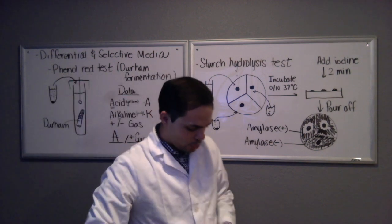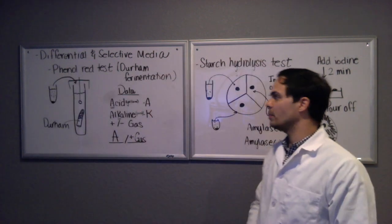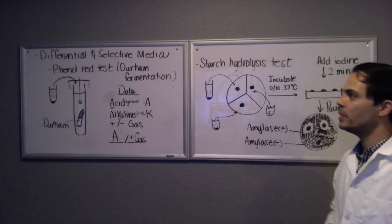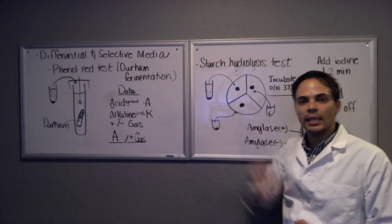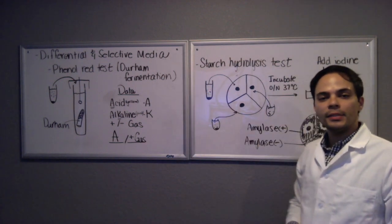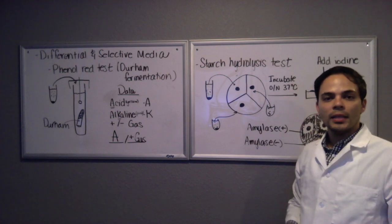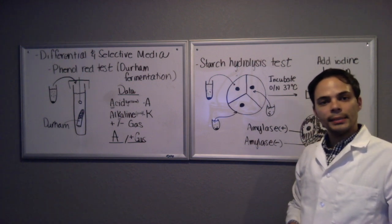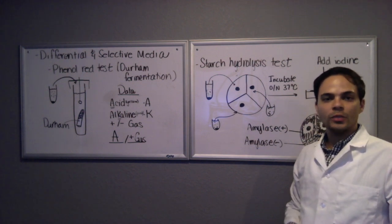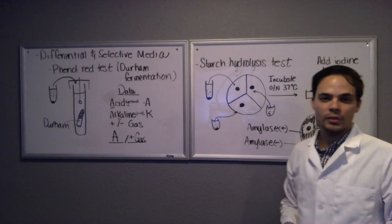You just add that to your growing table of data from the various microbes that you're testing with the differential and selective media. The next tests we're going to discuss are the blood agar tests, the catalase tests, as well as the oxidase test. So stay tuned for those.